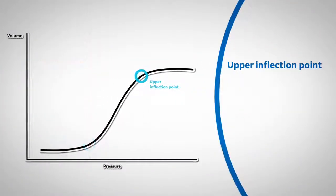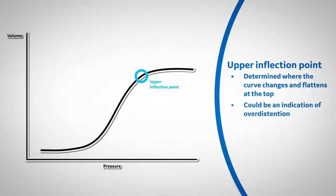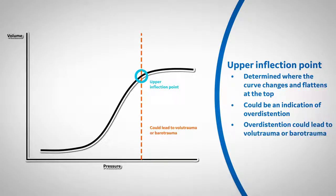The upper inflection point is determined where the curve changes and flattens at the top. This could be an indication of overdistention or the maximum setting for peak airway pressure. If overdistention occurs over an extended period of time, it could lead to volutrauma or barotrauma.